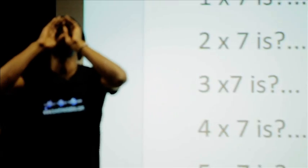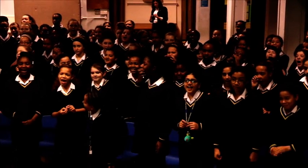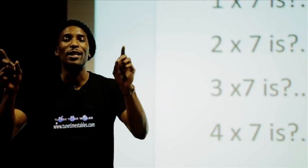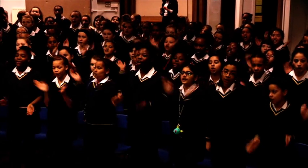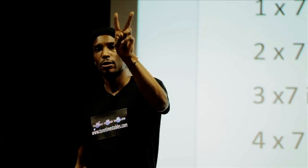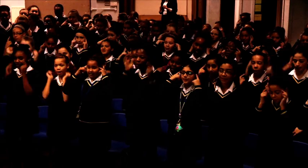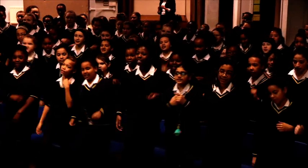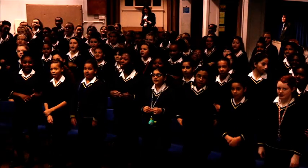Alright, are you ready? Yeah! Okay, let's do this. One times seven is seven. Two times seven is fourteen. Happy, rainy and sporty. Five times seven is thirty-five.